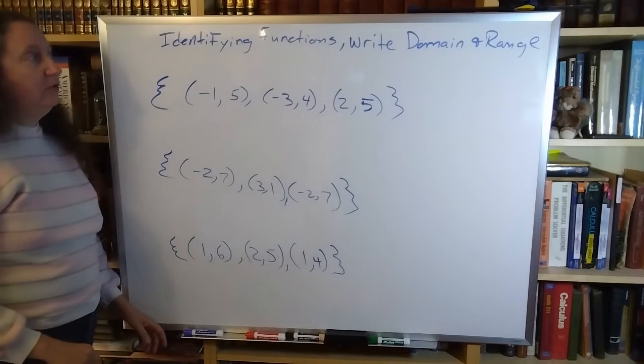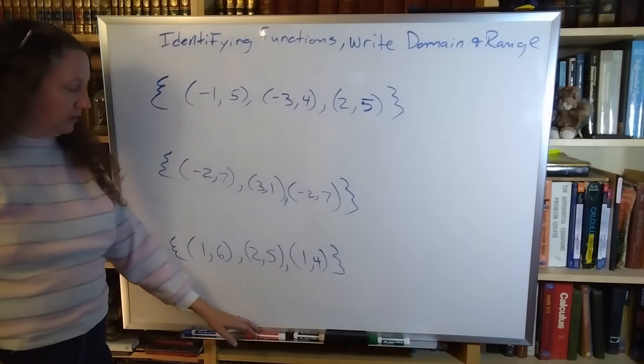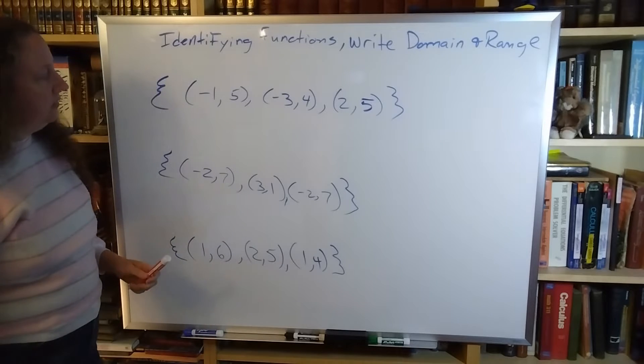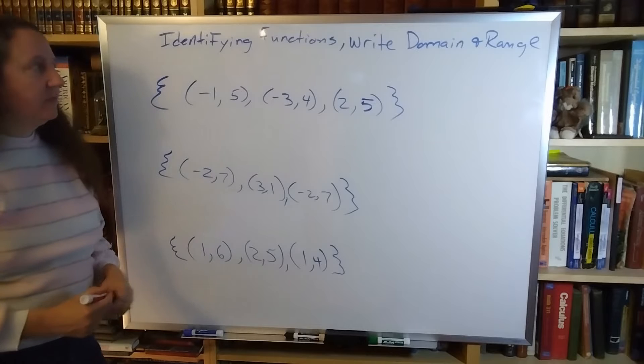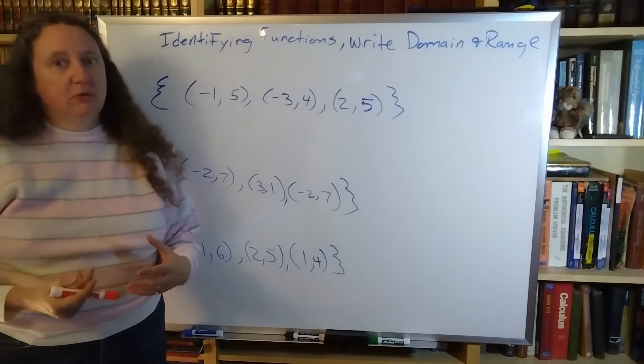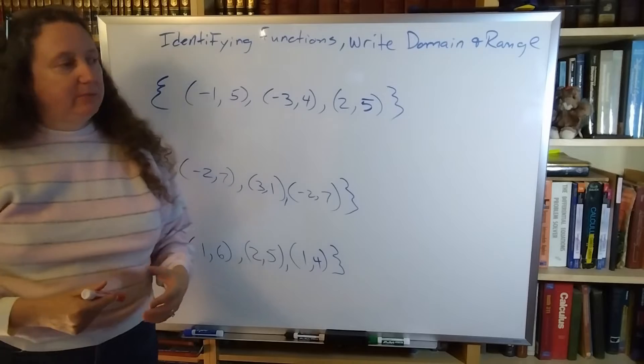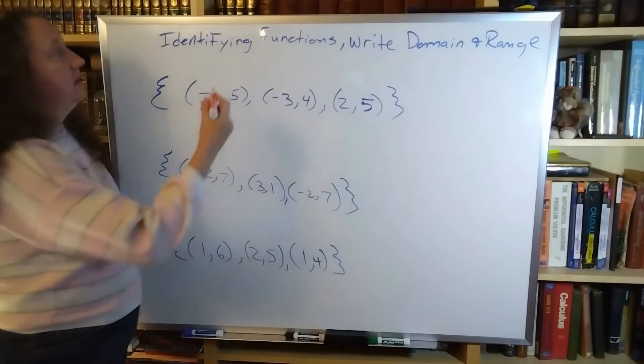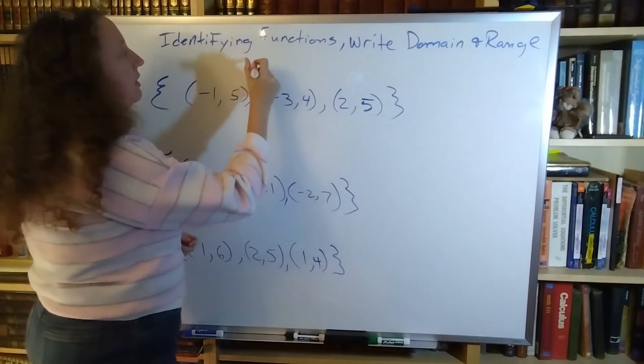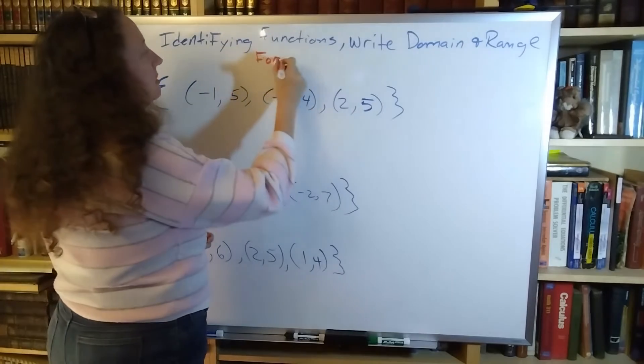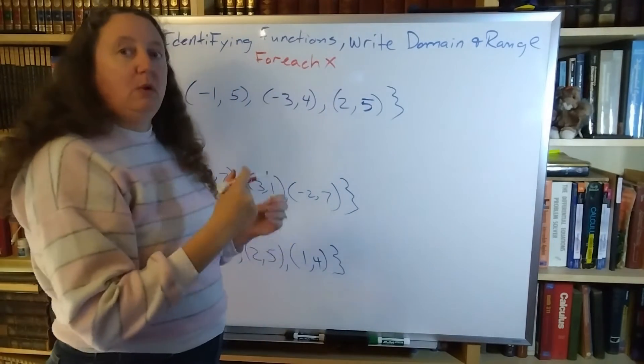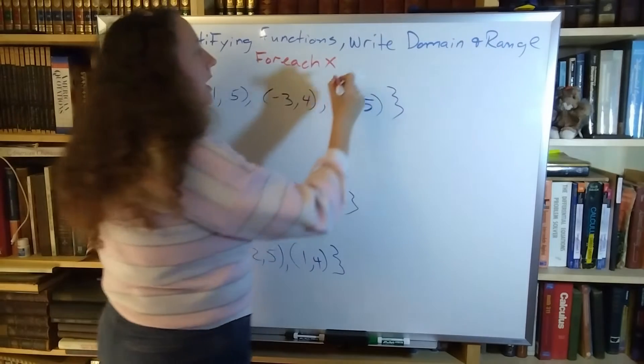Identifying functions and writing the domain and range of those functions. We have three examples here. Identifying whether it is a function or just a relationship - functions are one-to-one. That means for each x there is only one y.